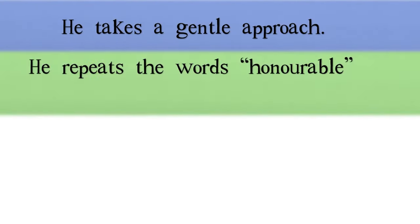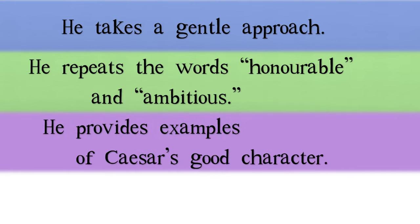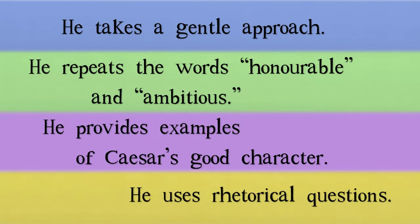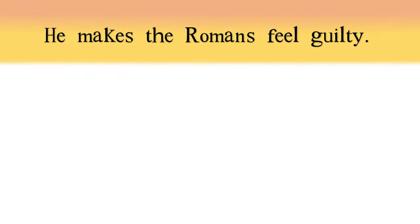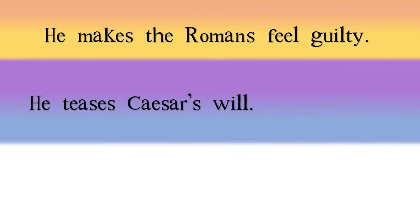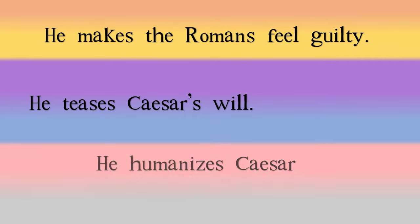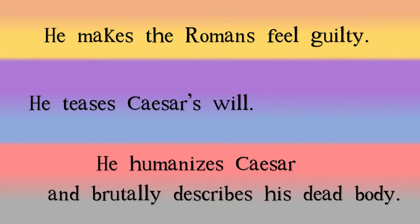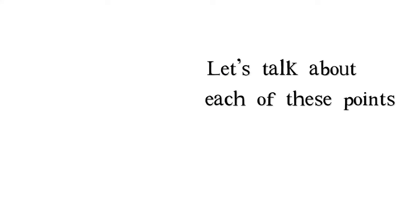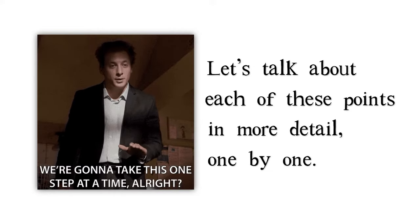The seven techniques are: he takes a gentle approach; he repeats the words 'honorable' and 'ambitious'; he provides examples of Caesar's good character; he uses rhetorical questions; he makes the Romans feel guilty; he teases Caesar's will; and finally, he humanizes Caesar and brutally describes his dead body. Let's talk about each of these points in more detail, one by one.